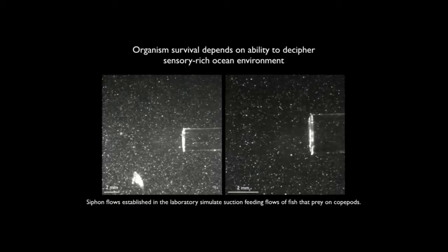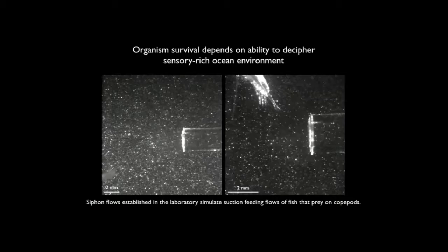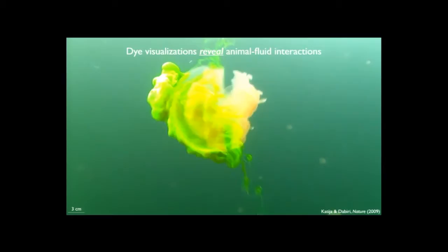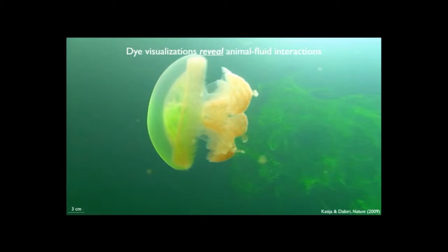If we're interested in studying these kinds of interactions in the natural environment where these animals reside, we have to think about what tools are available. One basic way to visualize fluid flows is dye visualization — familiar on larger scales. On smaller scales, a scuba diver can place dye in front of an animal and that organism can swim through it, clearly showing fluid interactions. However, dye visualizations are useful but not quantitative — they're qualitative descriptions of what the flow is doing.